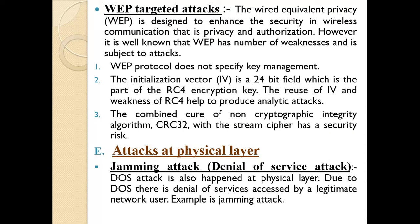WEP targeted attack: the Wired Equivalent Privacy (WEP) protocol is designed to enhance security in wireless communication, providing privacy and authorization. Three types of weaknesses include: WEP protocol does not specify key management; the initialization vector is a 24-bit field which is part of the RC4 encryption key; and the combined use of the non-cryptographic integrity algorithm CRC32.